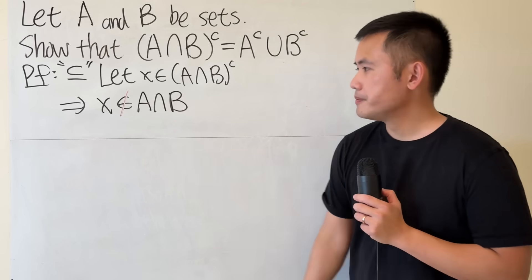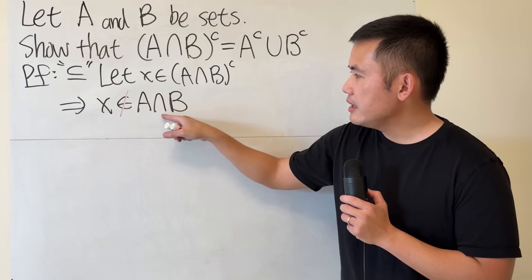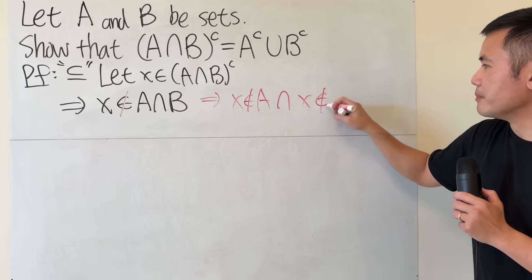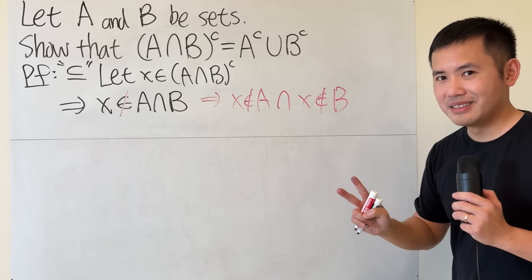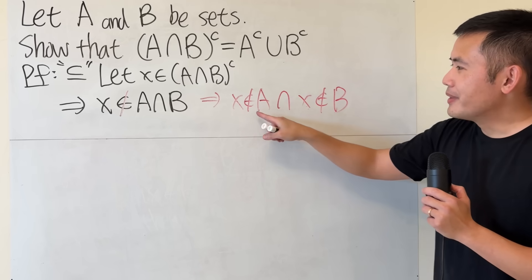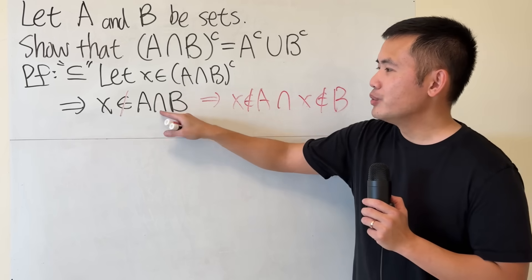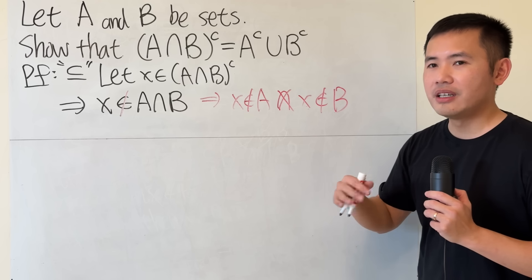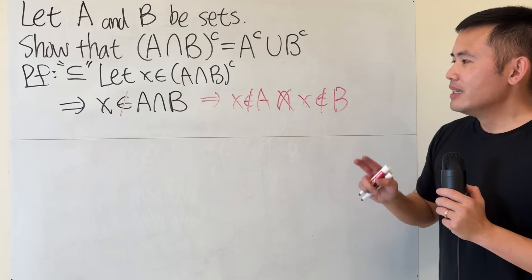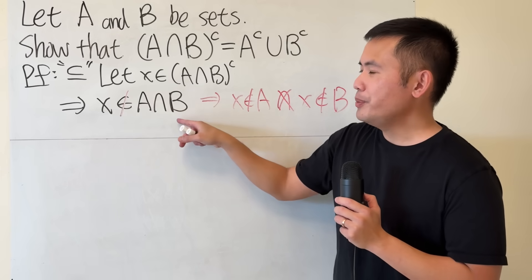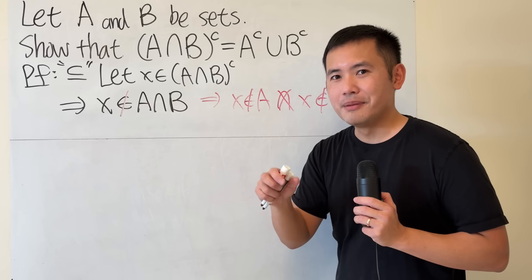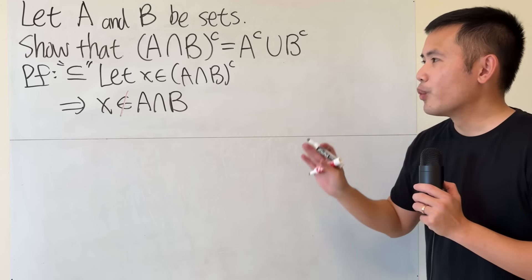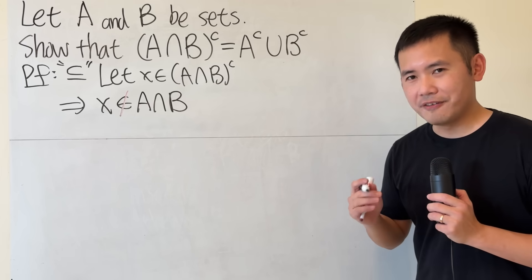Now we have to be careful here. X is not in A intersect B does not mean x is not in A intersect x is not in B — there are two mistakes. The first mistake is that this doesn't make sense with intersection, because intersection is used between two sets. If you want to write two separate things, you will have to use 'and' or 'or'. The second thing is that when you distribute the 'not', in between the intersection it turns into an 'or', not an 'and'. So this is actually false.